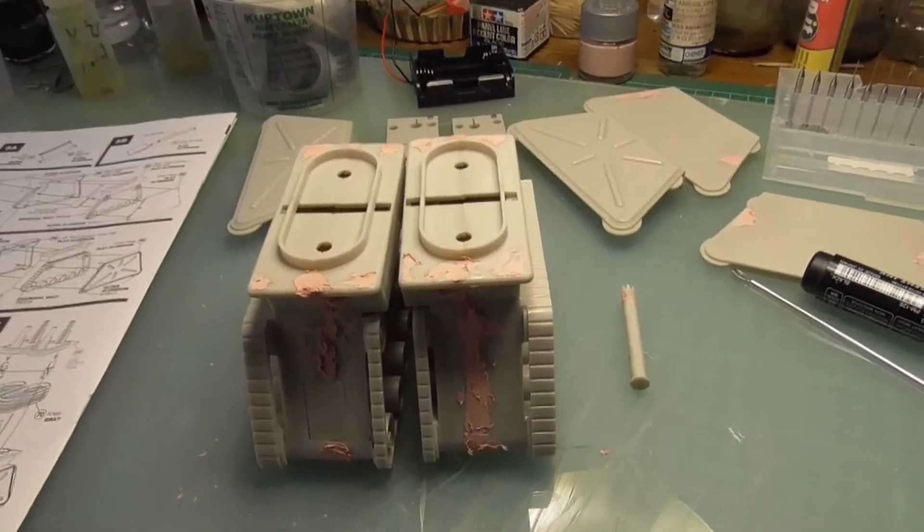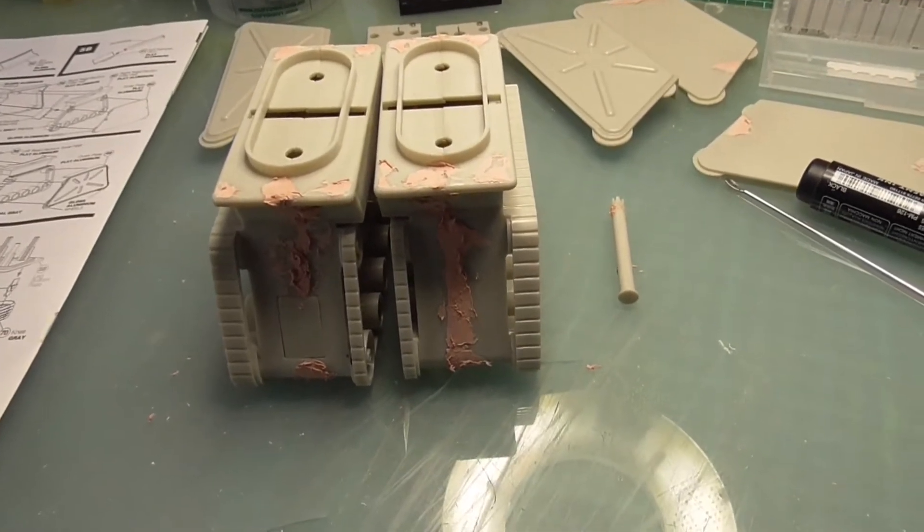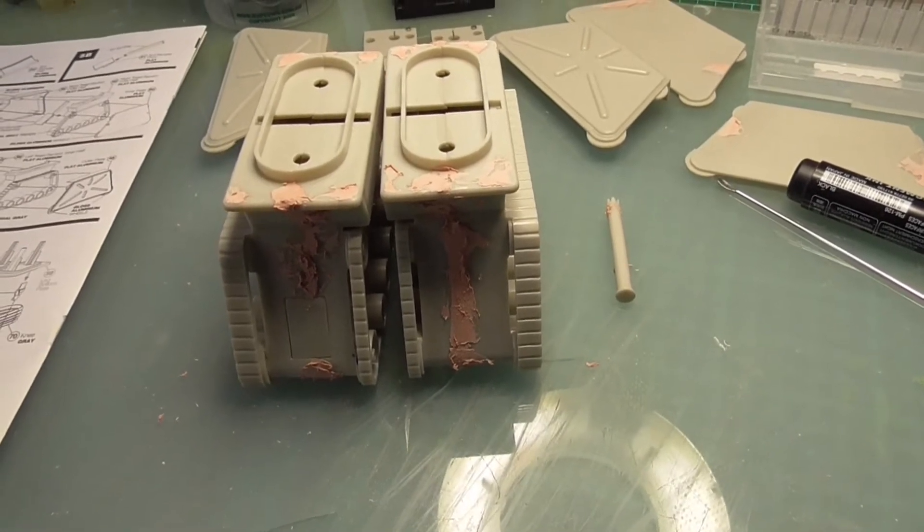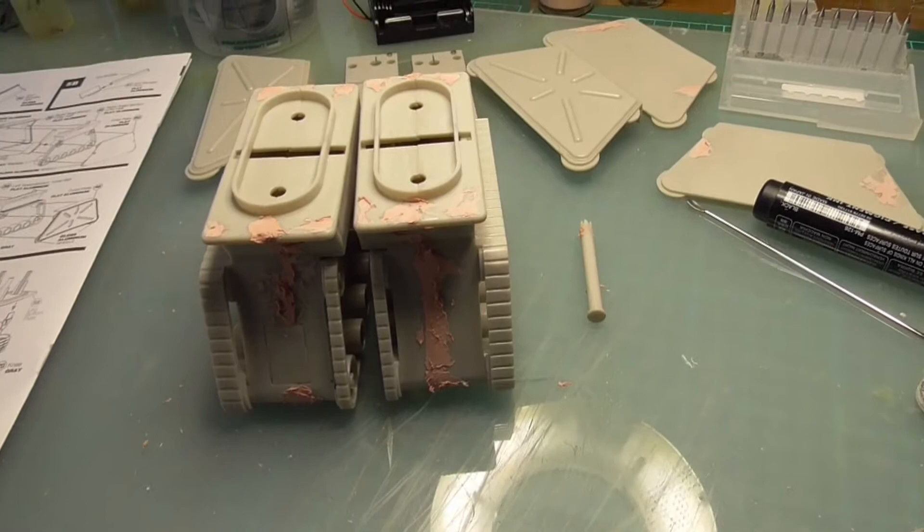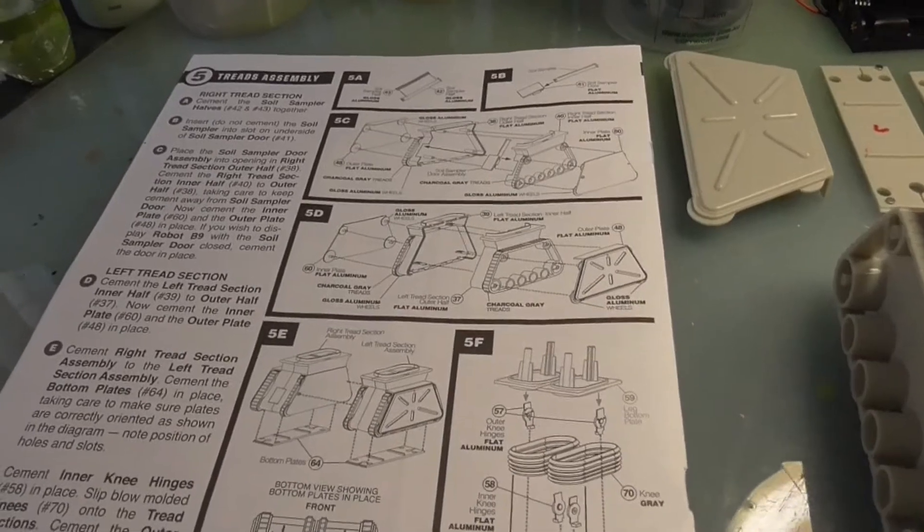Alright, so we started work on the B9 robot. What we're going to do is have a sort of daily entry, but we're going to try anyway. So for today's work, we're starting on the legs because I'm still waiting for some electronic parts to come in.